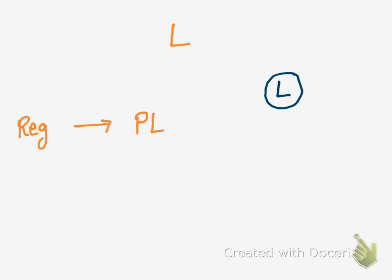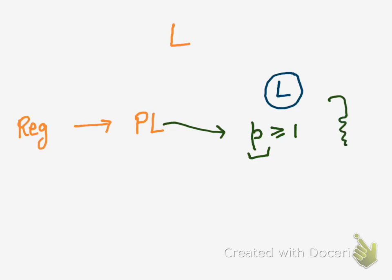In the example we did in the previous lecture we already made a finite automata. So when we look at the pumping lemma, it is based on the existence of a number p which is greater than or equal to one, and this p is the number of states in the automata. Now since I do not know what the automata is, I do not have the value of p. Whenever you are solving any question of pumping lemma, you cannot give p a specific value because we do not know what p is — p can be any number greater than or equal to one.